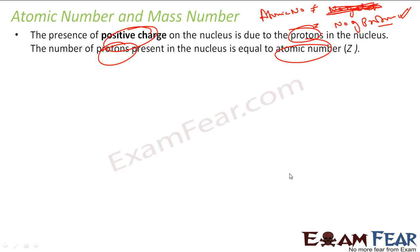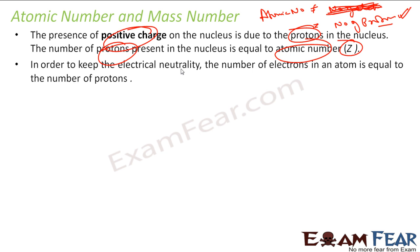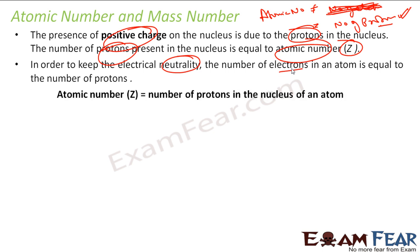Atomic number is denoted by Z. If the atom is neutral, in that case the number of protons will equal the number of electrons. But this will happen only in the case of neutral atoms. So atomic number is nothing but the number of protons in the nucleus.